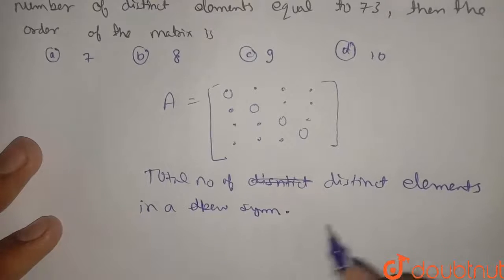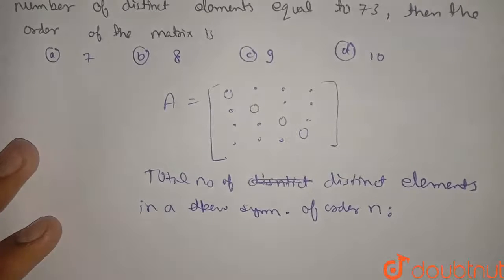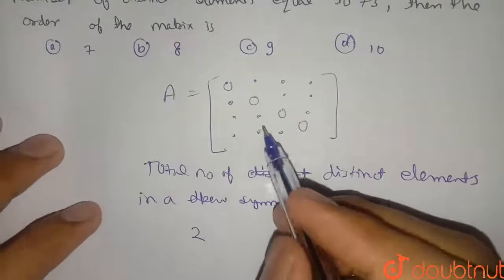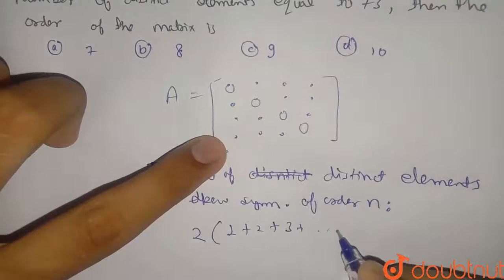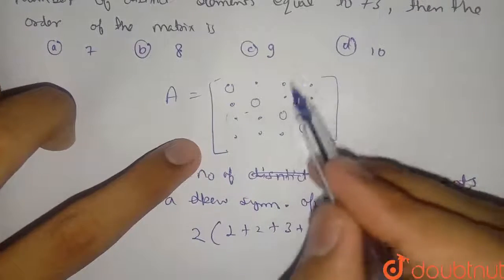It will be twice of first of all this triangle. So in this triangle the distinct elements can be one plus two plus three plus till n. Similarly we have two triangles, this triangle and this triangle.